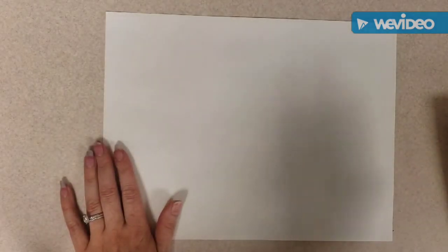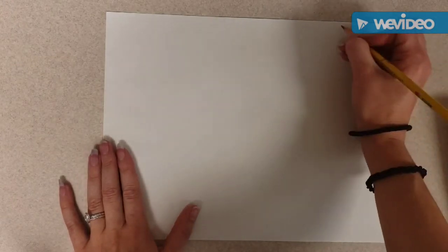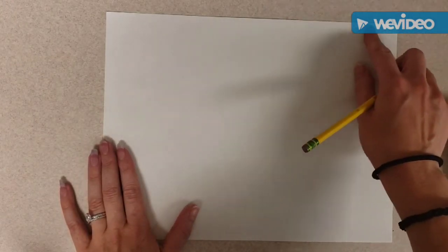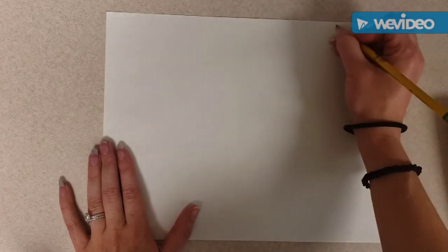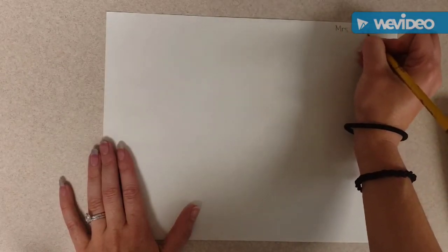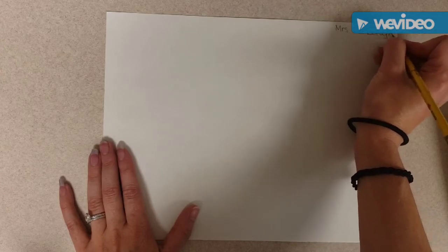The first thing we're going to do is write our name on the back of our paper. I'm going to put mine up in the corner so that if I make a mistake and need to use the back, it's not in the middle of my picture. Once I do that, I flip my paper over.